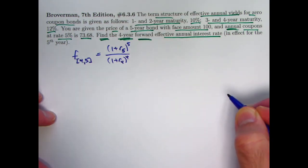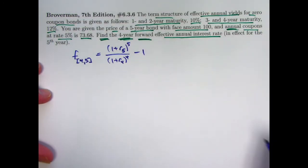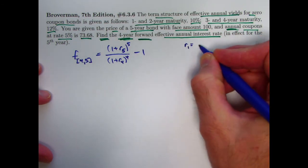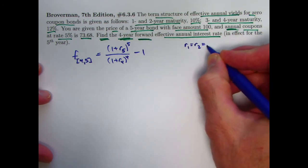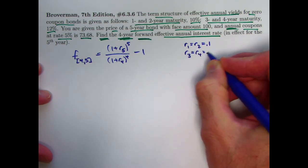Where R4 is the spot rate for a zero-coupon bond with four-year maturity, which is given to be 12%, minus 1. There is the formula. R4 again is given. Let's go ahead and write down what we're given. R1 and R2 are 0.1. R3 and R4 are 0.12.